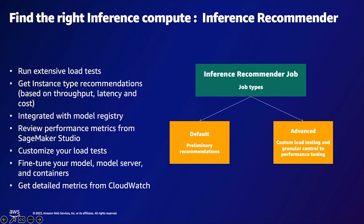Let's look at what powers your SageMaker endpoints. For finding the right compute instance, we have a capability called Inference Recommender. SageMaker Inference Recommender allows customers to perform automated load testing and model tuning across ML instances. You can use it to deploy your models to a real-time endpoint with best performance at lowest cost, helping you select the best instance and configurations such as instance count, container parameters, environment variables, and model optimizations.